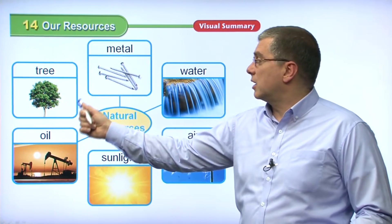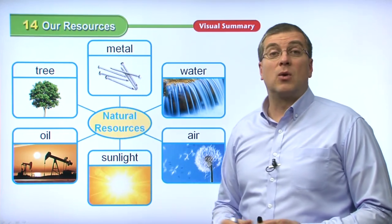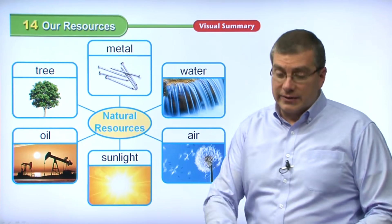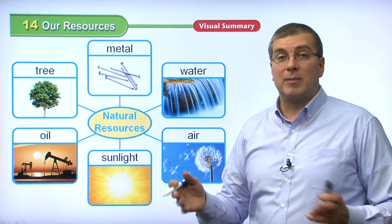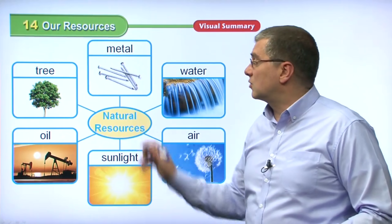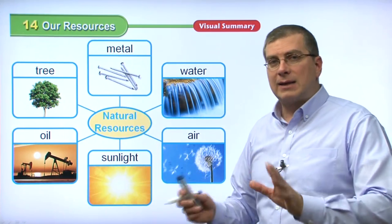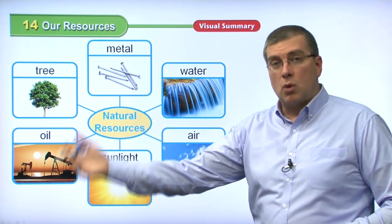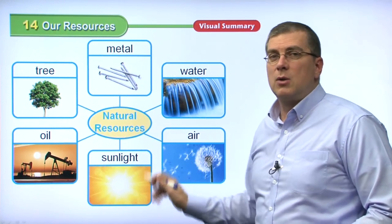That brings us to our last natural resource on the chart: trees. What do we use trees for? We use trees to make wood, and wood is used to make paper. But we also use wood for many other things — it's very nice to make furniture, desks, chairs, and tables from wood. We use wood to make homes too. It is something that is renewed; we can plant more trees to make more wood. But we have to be careful not to cut down all the trees at once — we must grow new trees so there's more wood in the future.